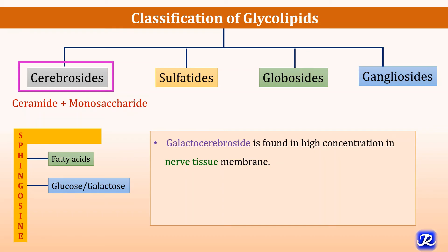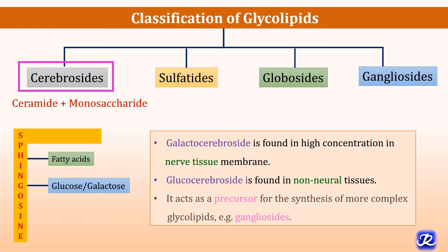Galactocerebroside, where galactose is present as the monosaccharide, is found in high concentration in nervous tissue membrane. The glucocerebroside — when glucose is present as the monosaccharide — is found in non-neural tissues. Galactocerebroside is present in neural tissue and glucocerebroside is present in non-neural tissues. It acts as a precursor for synthesis of more complex glycolipids like gangliosides.